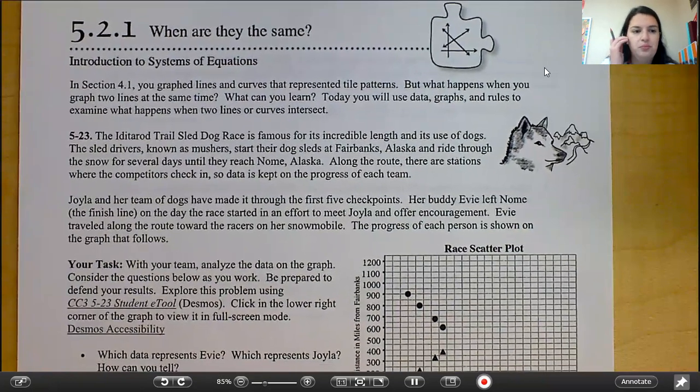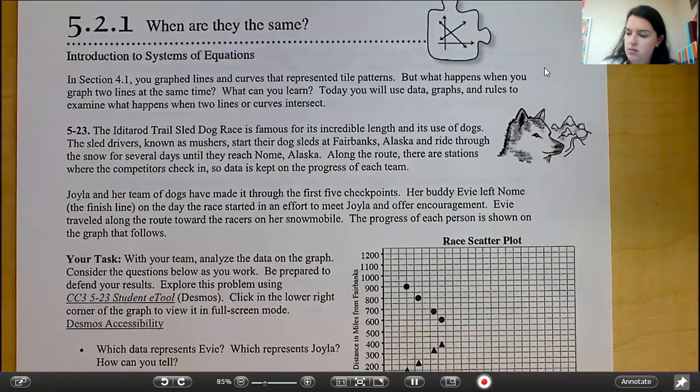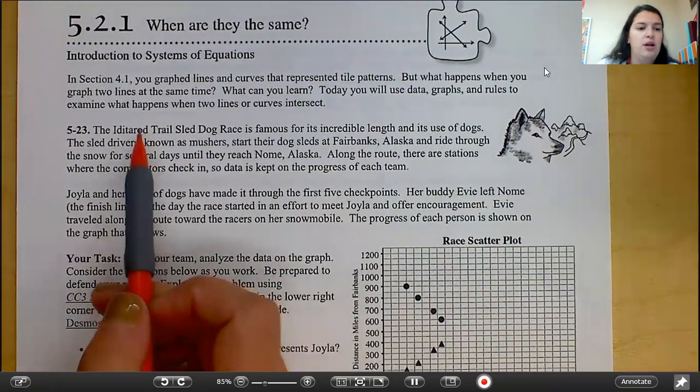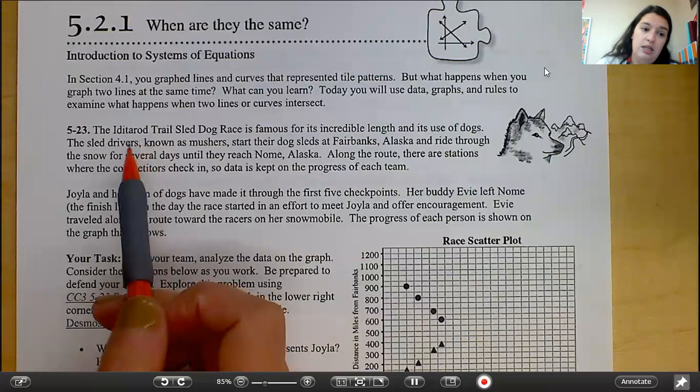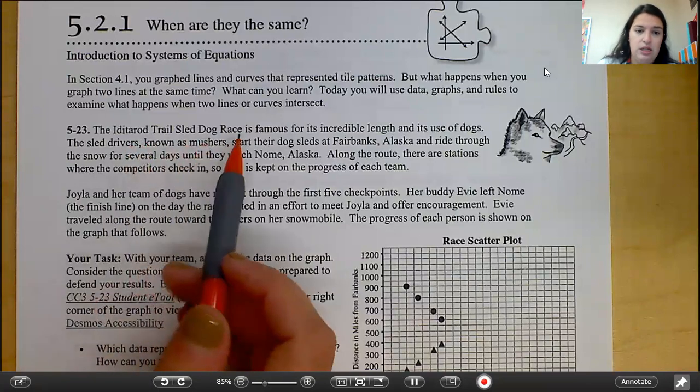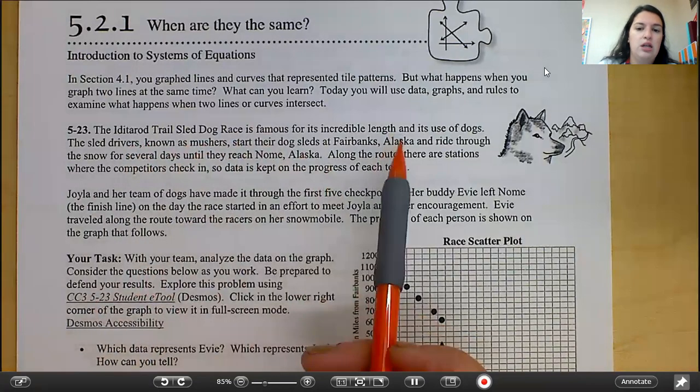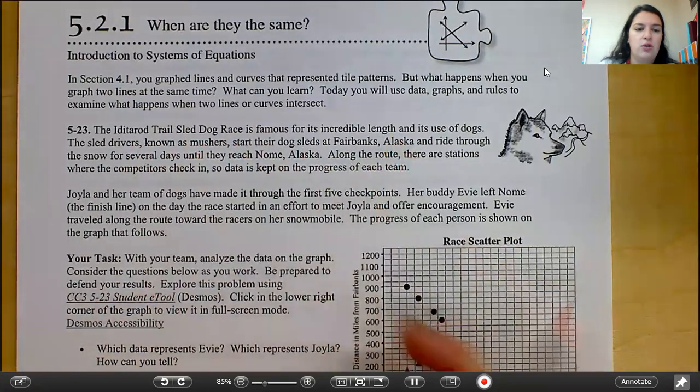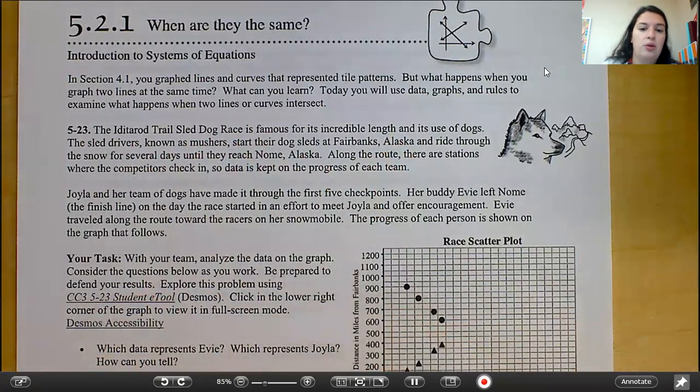Problem 5.23. The Iditarod Trail Sled Dog Race is famous for its incredible length and its use of dogs. The sled drivers, known as mushers, start their dog sleds at Fairbanks, Alaska, and ride through the snow for several days until they reach Nome, Alaska. Along the route, there are stations where the competitors check in so data is kept on the progress of each team.